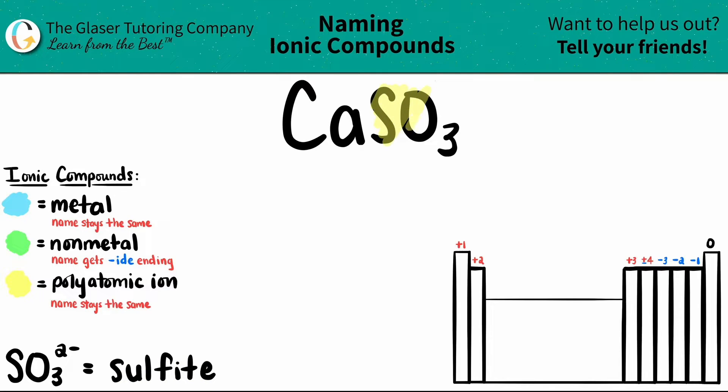So this whole thing is the polyatomic, which means that the Ca is the metal. Remember, an ionic compound is a metal plus a nonmetal or a polyatomic.